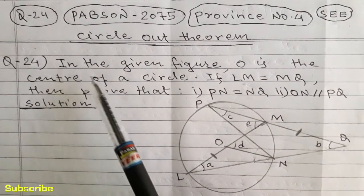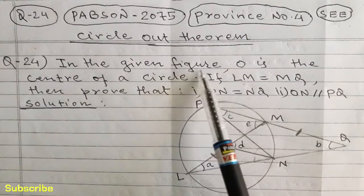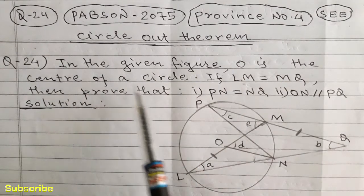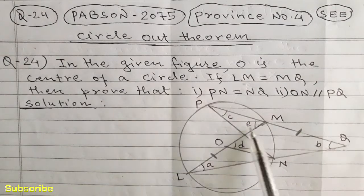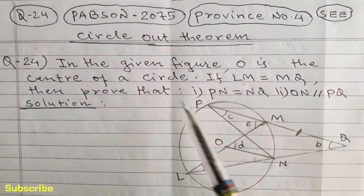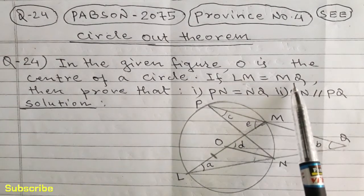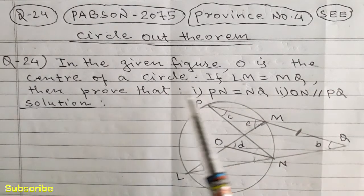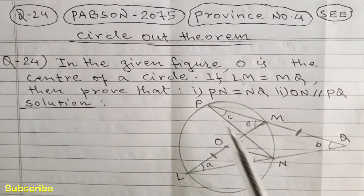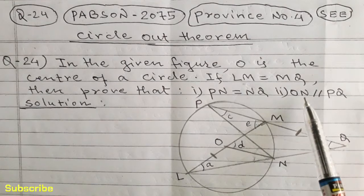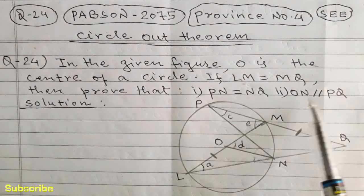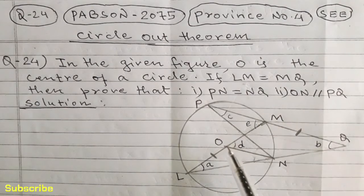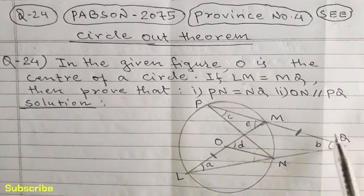In question number 24, the question is: in the given figure, O is the center of a circle. If side LM is equal to MQ, then prove that PN is equal to MQ, and ON is parallel to PQ.